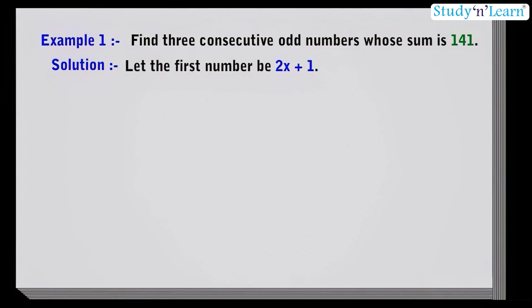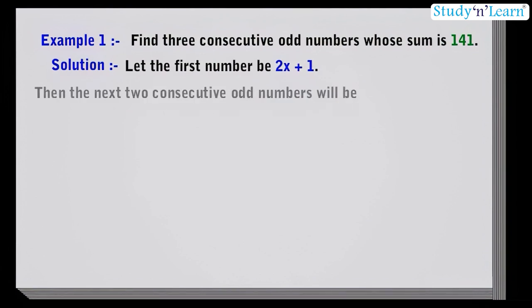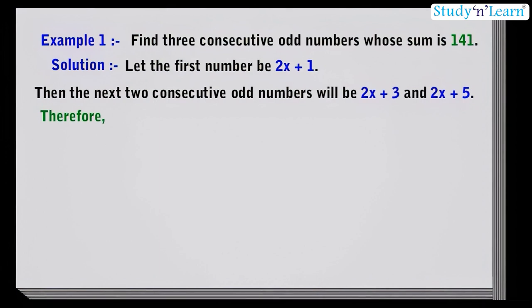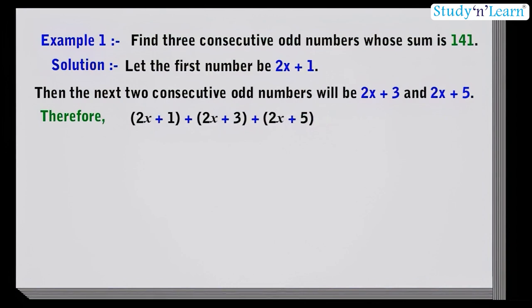Let the first number be 2x plus 1. The next two consecutive odd numbers will be 2x plus 3 and 2x plus 5. Therefore, it is given in the question that the sum of these three consecutive odd numbers is 141. So, 2x plus 1 plus 2x plus 3 plus 2x plus 5 is equal to 141.